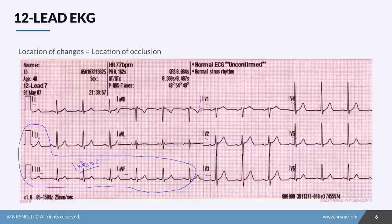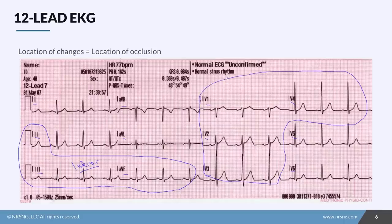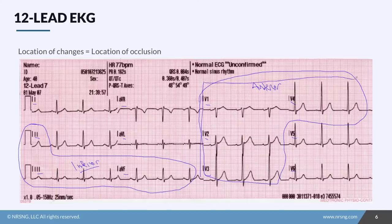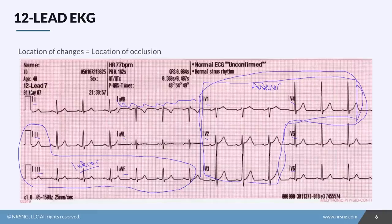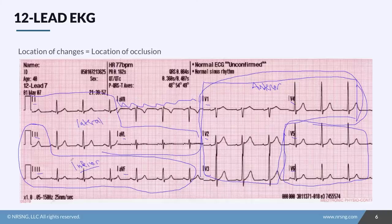V1 through V4 are the anterior leads. It might be kind of hard to see, but I want you to remember this — it kind of looks like the front of a shirt. So V1 through V4 are your anterior leads, anterior meaning front. AVR doesn't give us anything specific enough for our reading, so we cross it out and don't really worry about it. The ones we have leftover are one, AVL, V5, and V6. Leftover equals lateral.